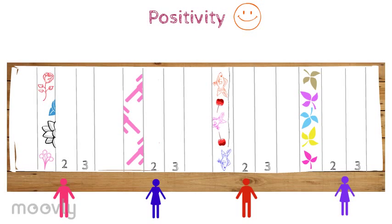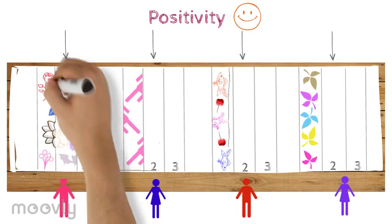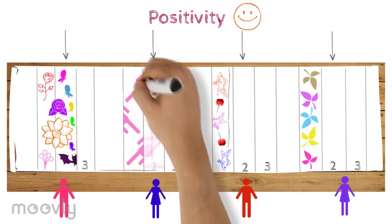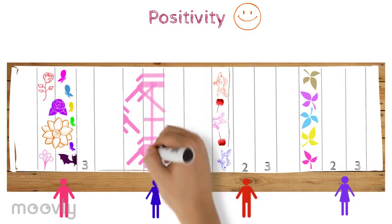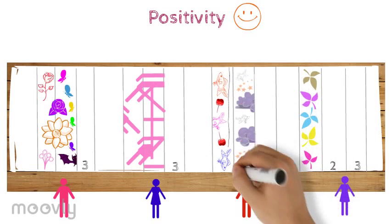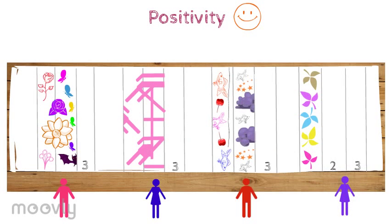The participant draws something in the second strip that connects to the drawing in the first strip made by the previous person. An abstract image doesn't have to stay abstract.